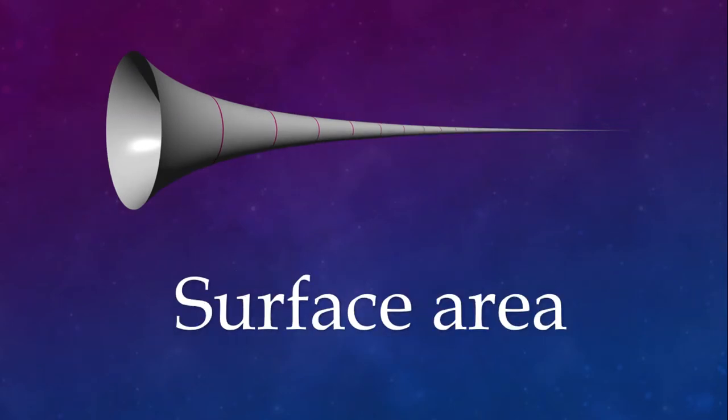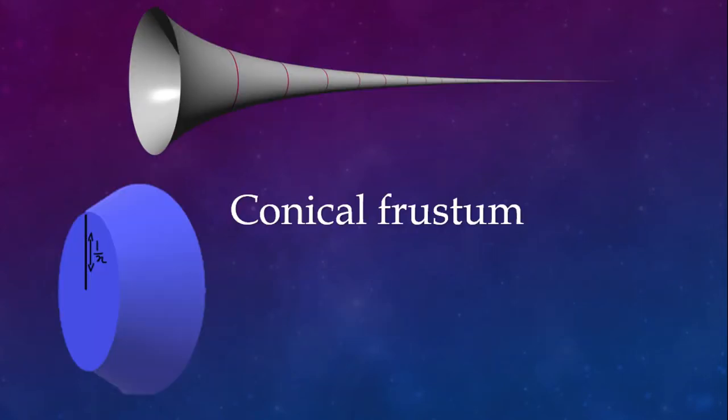Alright, and now let's calculate the surface area of Gabriel's horn. We're gonna use the same method that we used to calculate its volume. But this time we're gonna make a slight difference.